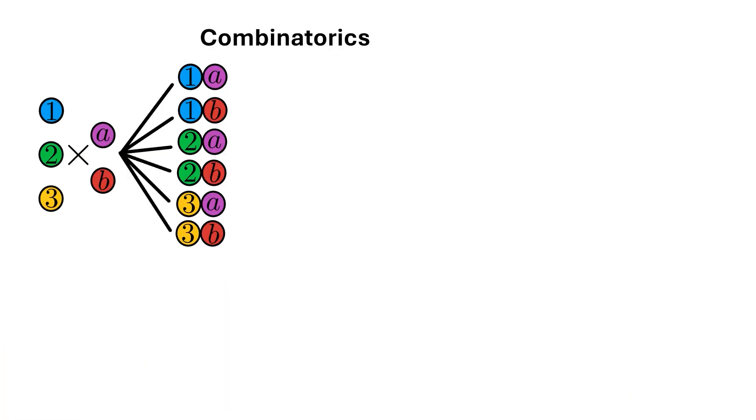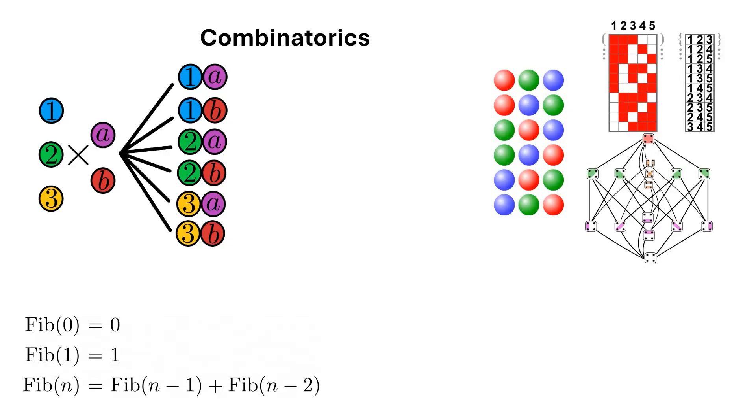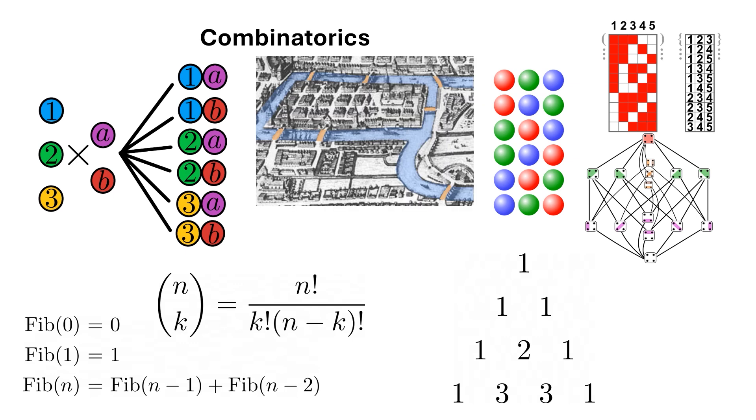Combinatorics. Combinatorics is primarily about counting, particularly how to count complicated combinations of things. Historically important ideas in the subject of combinatorics include the Fibonacci numbers, counting permutations, combinations, and partitions, the binomial coefficient, Pascal's triangle, the bridge of Konigsberg problem, and so on.